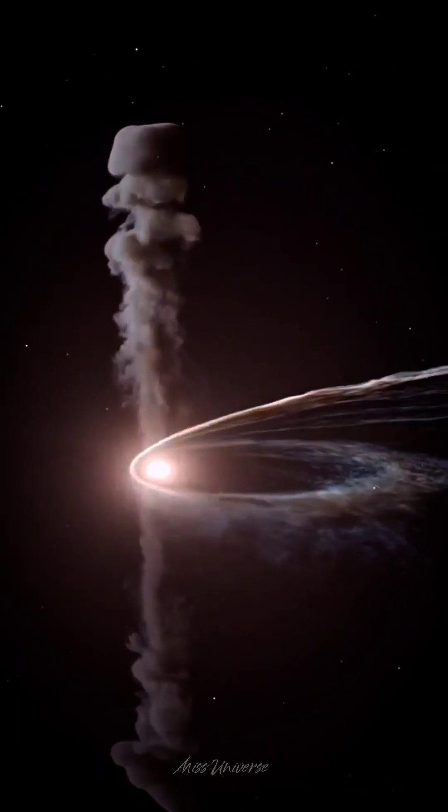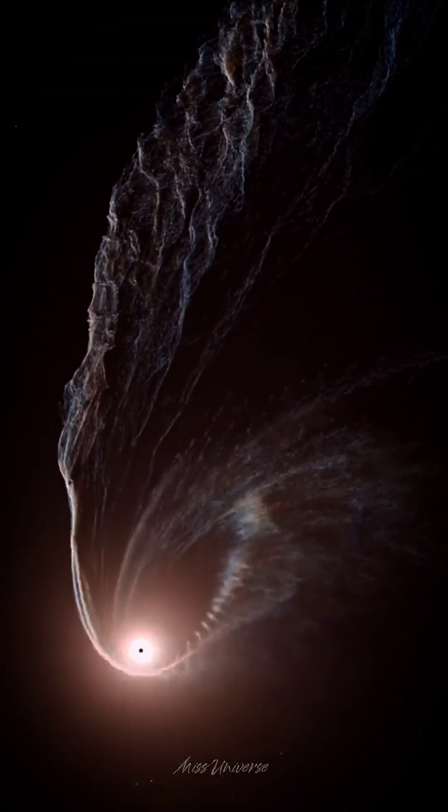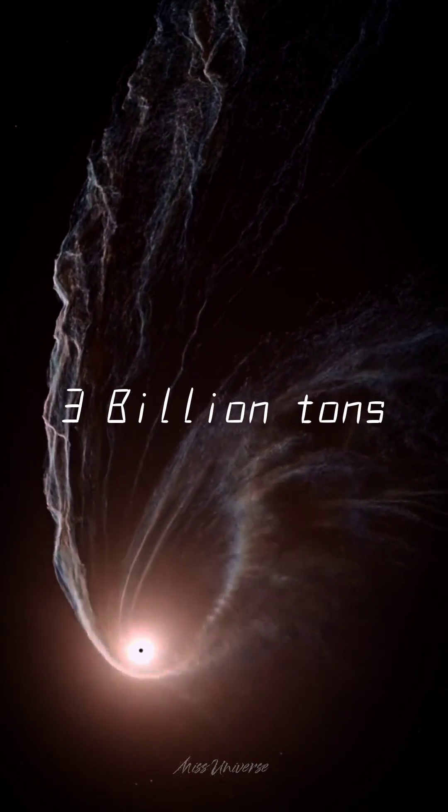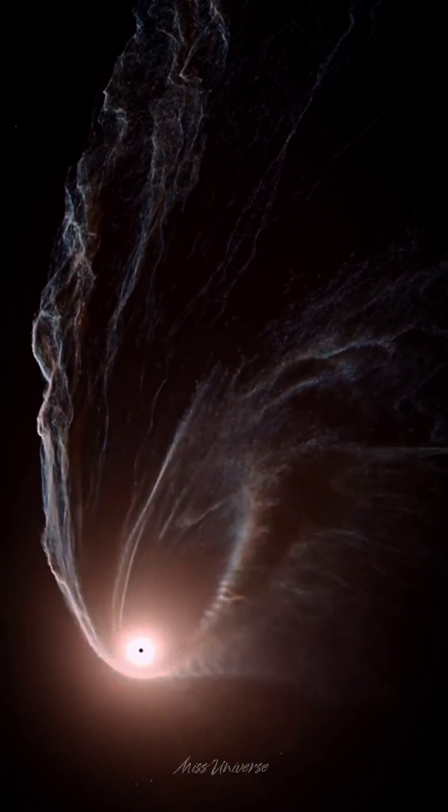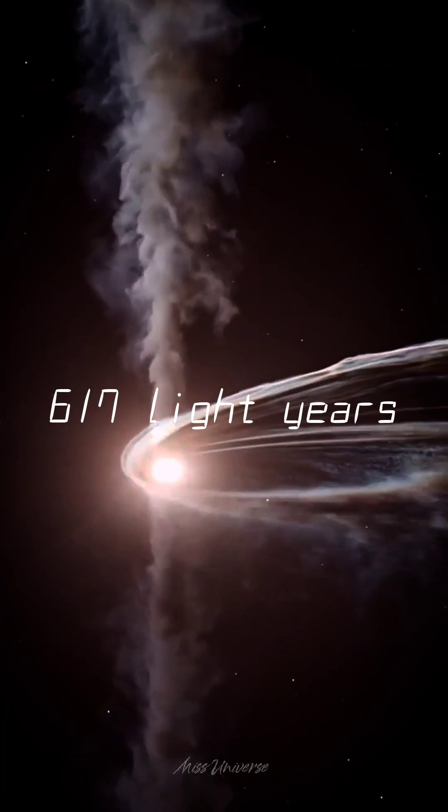Neutron star material is remarkably dense. A normal-sized matchbox containing neutron star material would have a weight of approximately 3 billion tons. You will find the nearest neutron star, nicknamed Calvera, about 617 light-years away from us.